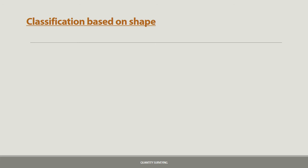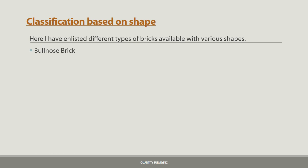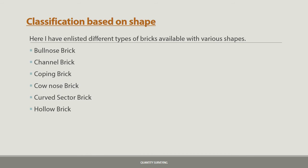Bricks are also classified on the basis of their shape. Ordinary bricks are rectangular solids, but sometimes bricks are given different shapes to make them suitable for particular types of construction work. Different types of bricks available with various shapes include: bullnose brick, channel brick, coping brick, cow nose brick, curved sector brick, hollow brick, paving brick, and perforated brick.